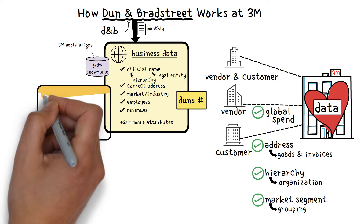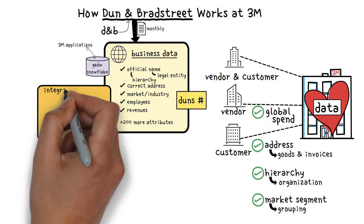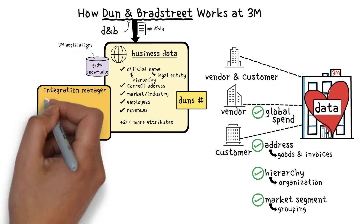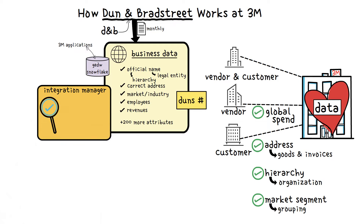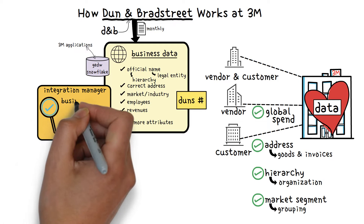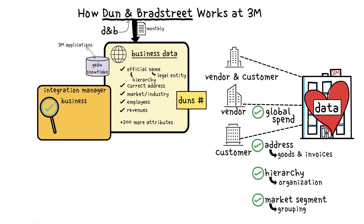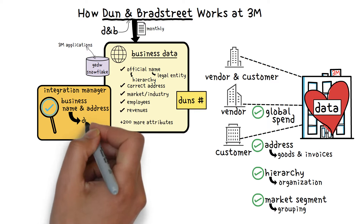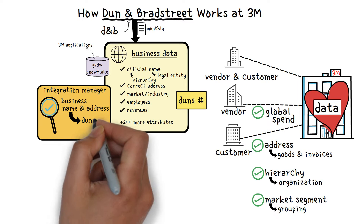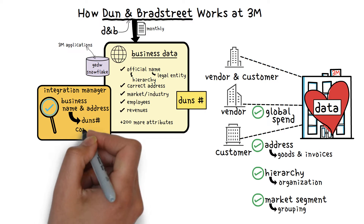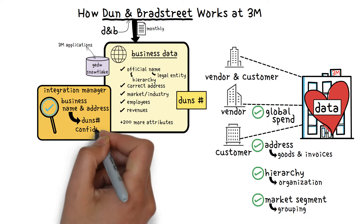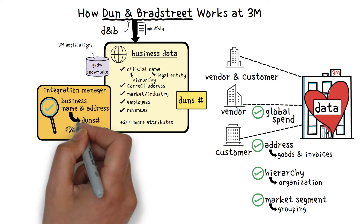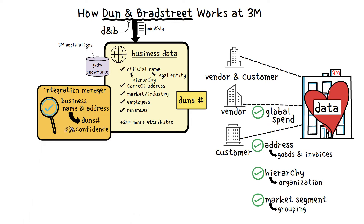Simply known as their DUNS number. Along with data from DNB, 3M can also use Dun & Bradstreet's Integration Manager tool to help identify a DUNS number for a given customer or vendor based on their name and address. This match not only returns the DUNS number but also a confidence score to help 3M decide if this match is reliable or not.